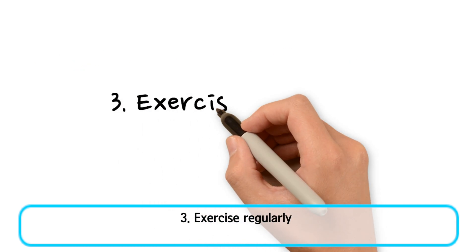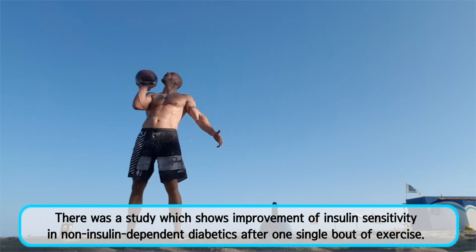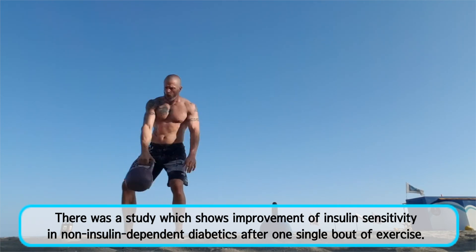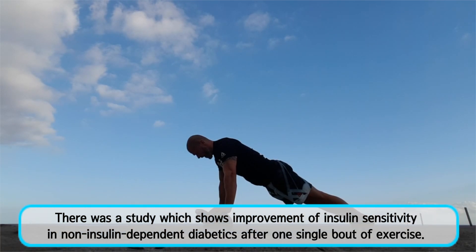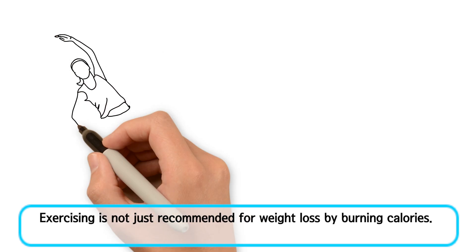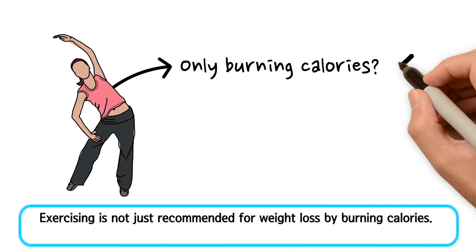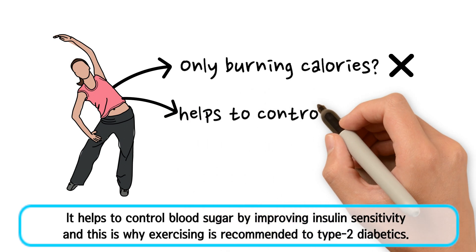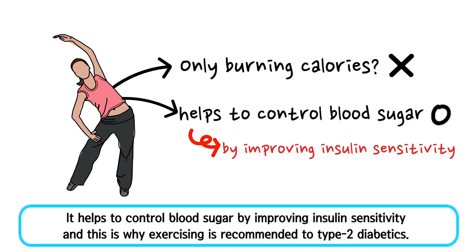Third, exercise regularly. There was a study which shows improvements of insulin sensitivity in non-insulin-dependent diabetics after just a single bout of exercise. Exercising is not just recommended for weight loss by burning calories — it helps to control blood sugar by improving insulin sensitivity, and this is why exercising is recommended for type 2 diabetics.